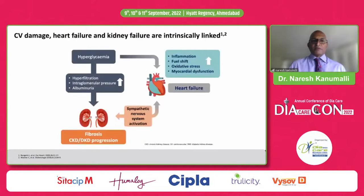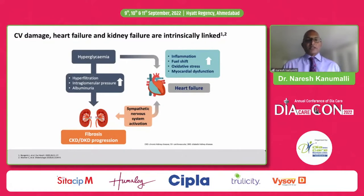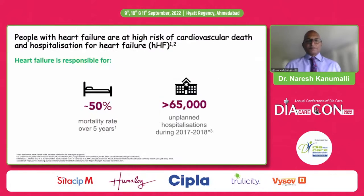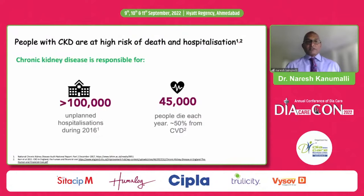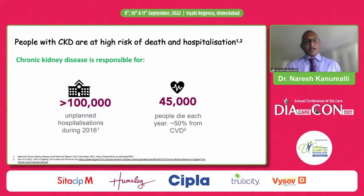The cardiac, renal, and metabolic systems are all connected, causing problems such as heart failure, chronic kidney disease, and diabetic kidney disease. In the UK, heart failure is responsible for 50% mortality over 5 years and 65,000 unplanned hospital admissions. Chronic kidney disease accounts for 100,000 unplanned hospital admissions and 45,000 deaths per year, more than 50% from cardiovascular disease — demonstrating why it's important to focus on the patient as a whole.